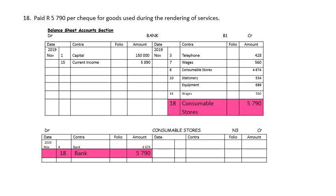On the 18th, we paid the cheque for goods used, which is consumable stores. We are spending money, so bank will be credited. Buying consumable stores means the expense will increase. Double entry principle — every debit needs a credit.